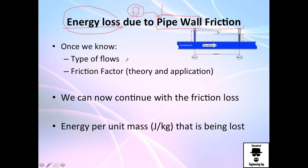Once we know the type of flow, for example laminar, transient which should be avoided, and turbulent, we will be able to calculate the friction factor. And then we will be able to continue with our calculations and do the energy loss due to friction.